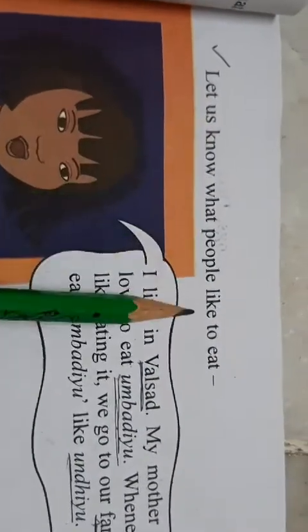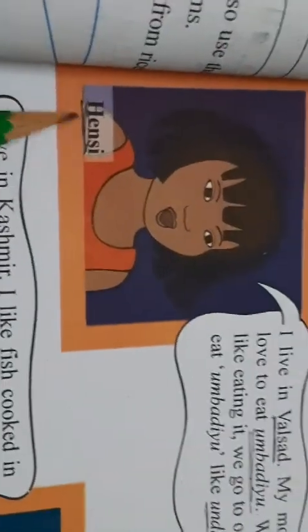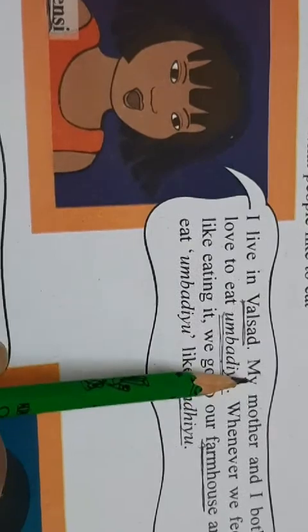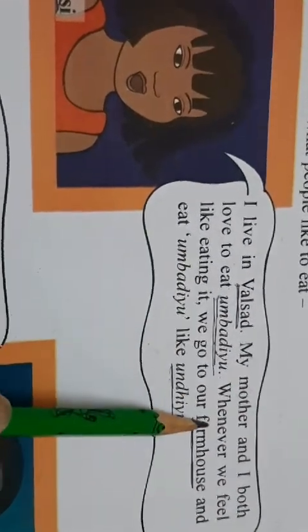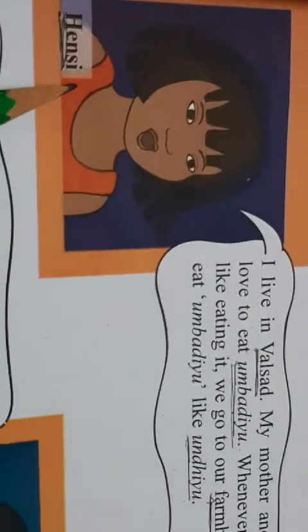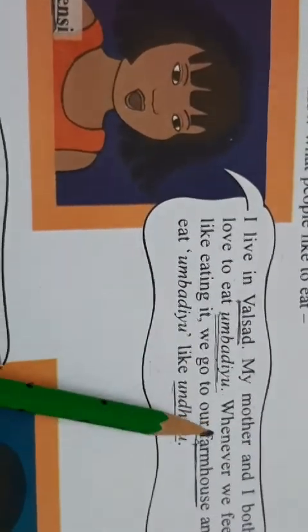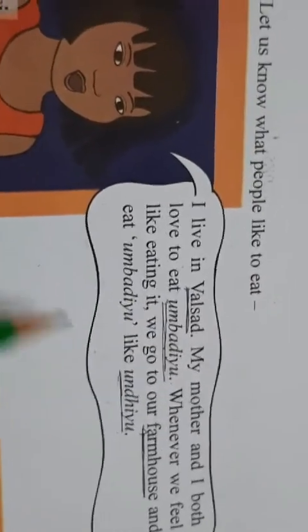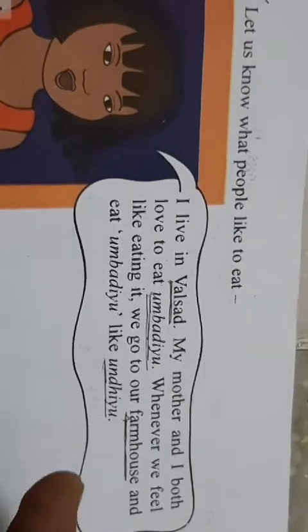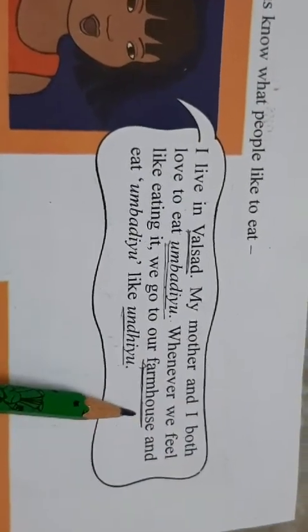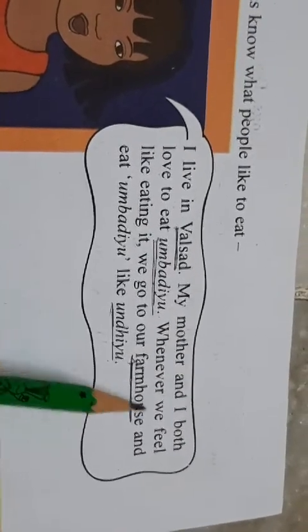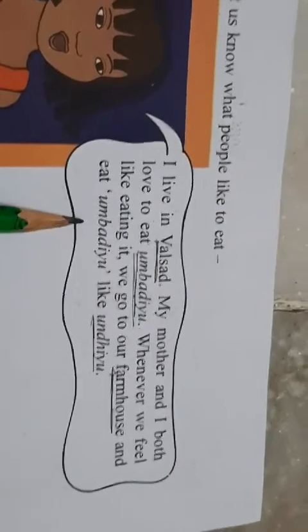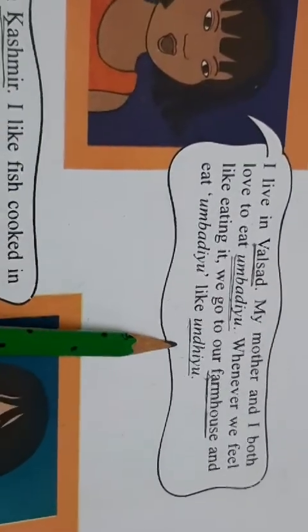Now here you can see — let us know what people like to eat. This girl's name is Hansi. I live in Valsad. My mother and I both love to eat Umbadiu. Whenever we feel like eating it, we go to our farm house and eat Umbadiu — like Undhiyu. Yeh ladki Hansi hai, Valsad mein rahti hai. Bolti hai, main aur meri mammi ko Umbadiu bahut pasand hai. Umbadiu ek aisa vegetable dish hai jismein bahut saare vegetables ko Undhiyu ke jaisi mix karke banaya jaata hai. To jab hamein Umbadiu khane ka mann hota hai, hum hamare farm house jaate hain, jahan bahut saare vegetables hote hain, aur wahaan jaake hum Umbadiu khaate hain.